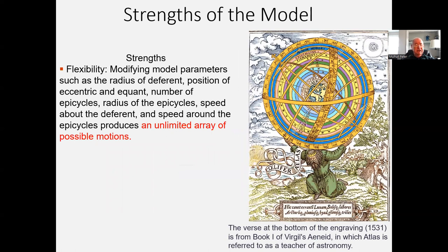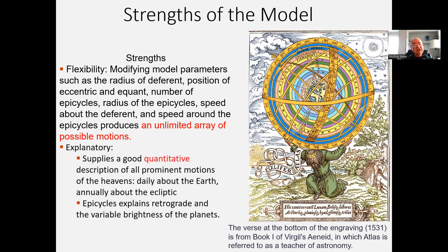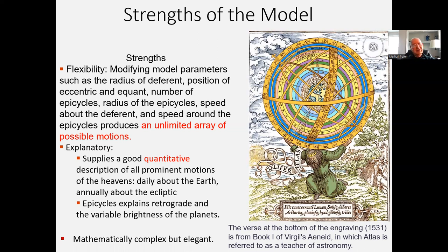The strength of the model: tremendous flexibility. You can modify the radii of the deferents, the positions of the eccentric and equant points, the epicycle radius, the speeds of the points, and the sizes of the epicycles — all these incredible levers and buttons to create different kinds of paths. Tremendous mathematical flexibility using all the devices at Ptolemy's disposal. It had great explanatory power — tremendous quantitative explanatory power. It could describe what the sky looked like quite accurately. Before the telescope, with just the naked eye, this was a very successful model. Mathematically complex, yes, but very elegant, using all the state-of-the-art Euclidean geometry.